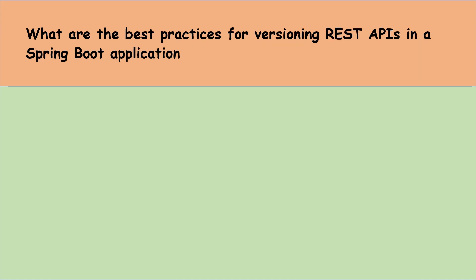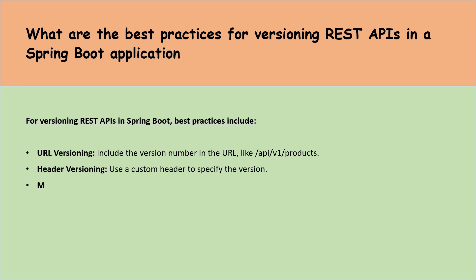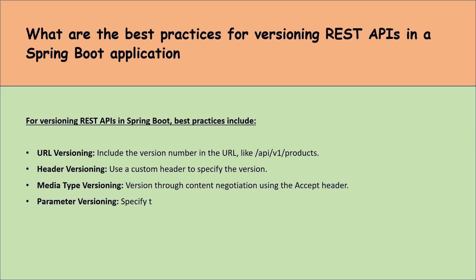What are the best practices for versioning REST APIs in a Spring Boot application? Best practices include: First, URL versioning — include the version number in the URL, like /api/v1/products. Second, header versioning — use a custom header to specify the version. Third, media type versioning — version through content negotiation using the Accept header. Fourth, parameter versioning — specify the version as a request parameter.